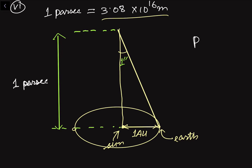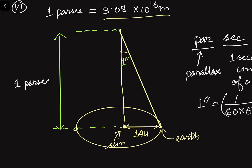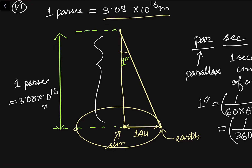The word 'parsec' comes from two words: 'par' from parallax — the method used to measure very long distances — and 'sec' from one second of a degree. One second equals one by 3600 of a degree, which is a very small angle, meaning the corresponding distance is very large: 3.08 × 10 to the power 16 meters. So one parsec is the distance at which the average radius of the Earth's orbit subtends an angle of one arc second.